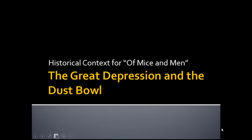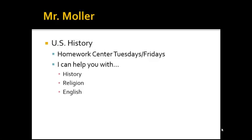Greetings students. Today I'm going to talk to you about the historical context for the book you're going to be reading, Of Mice and Men. We're going to talk about the Great Depression and the Dust Bowl, which were both major events in United States history. I'm Mr. Moeller, and I'm the U.S. History teacher here at Cristo Rey.